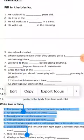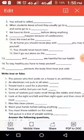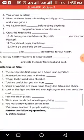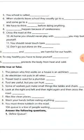Fifth blank: your school is called dash — you have to write the name of your school. Sixth: when students leave school they usually go to a dash, or some go to a dash — they usually go to a college or university. Seventh: we have to think dash before doing anything — we have to think carefully before doing anything.